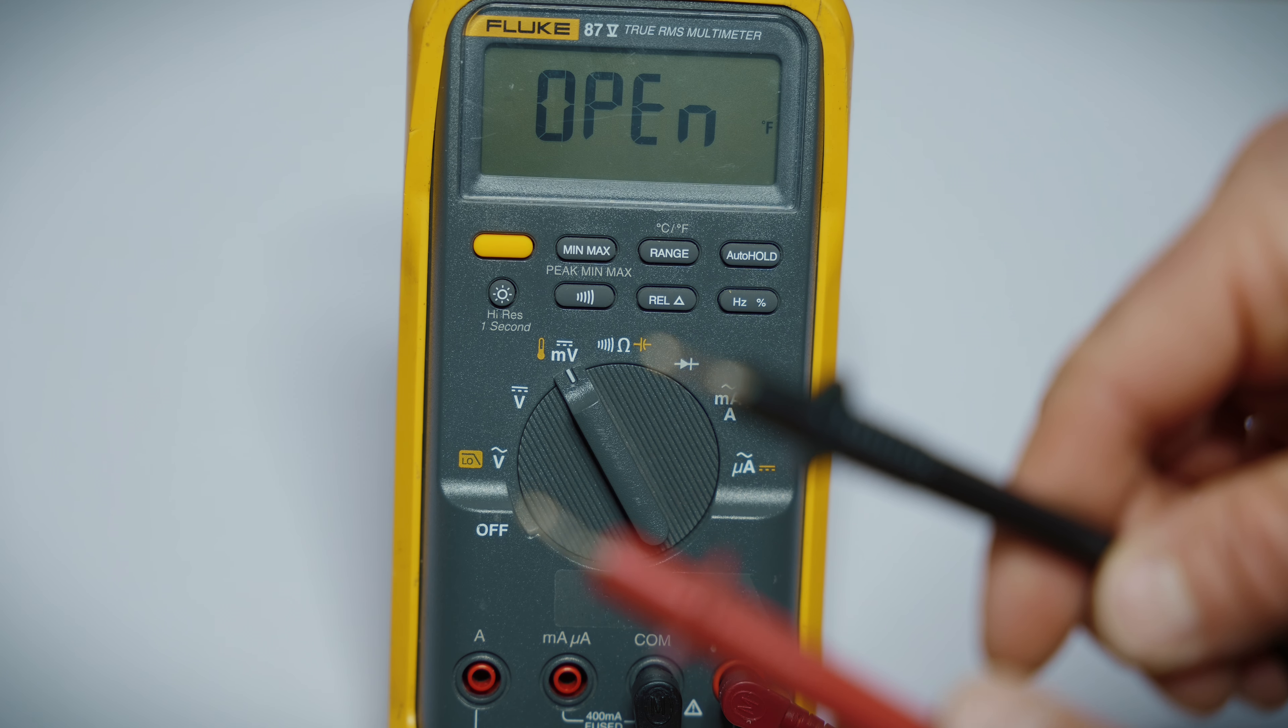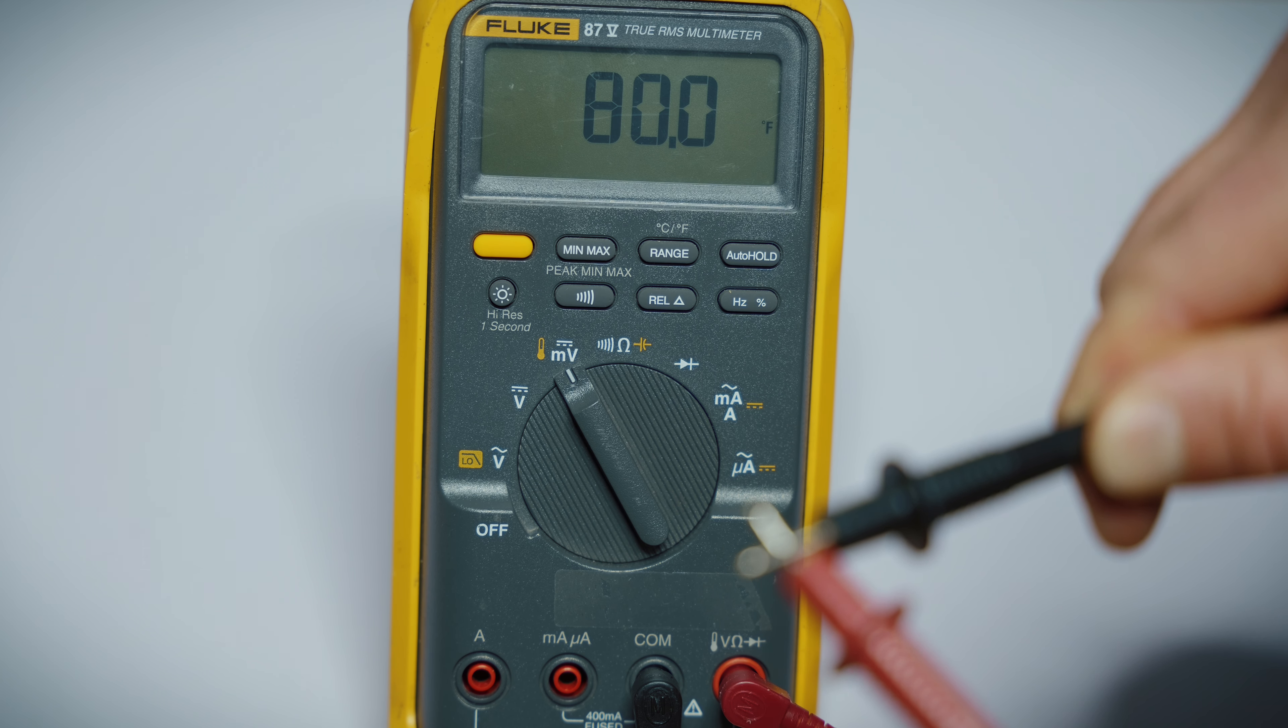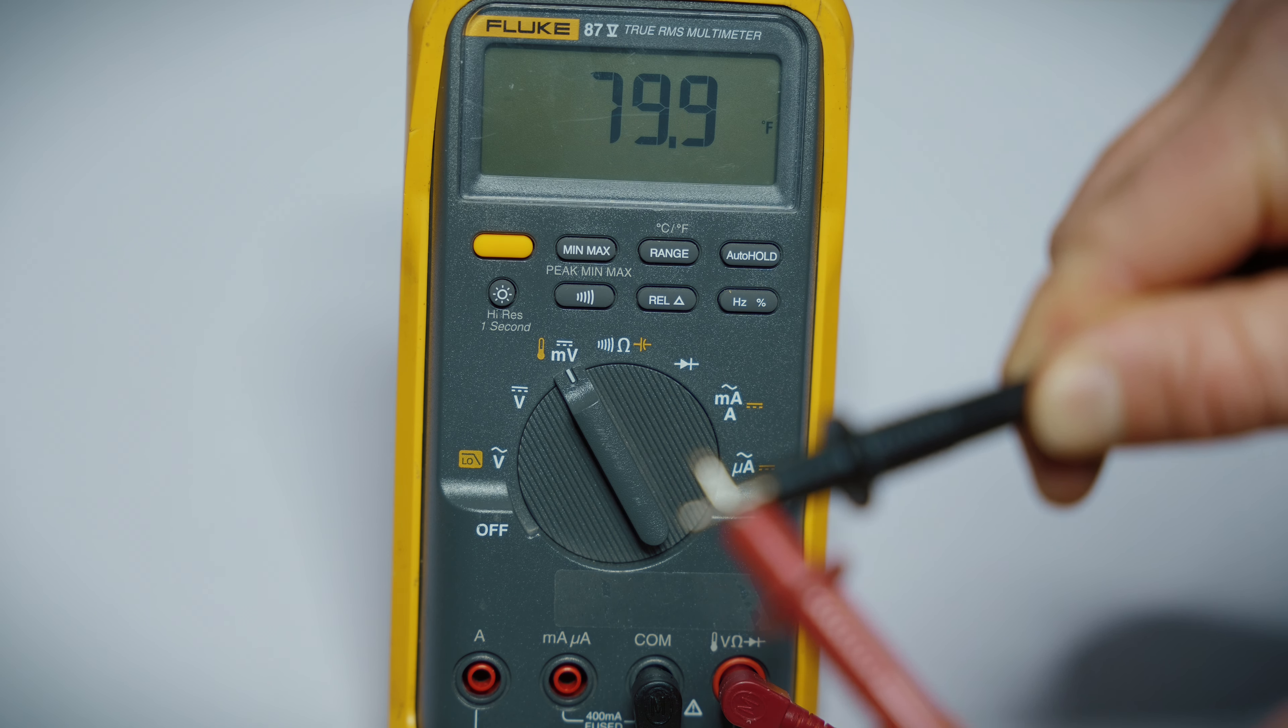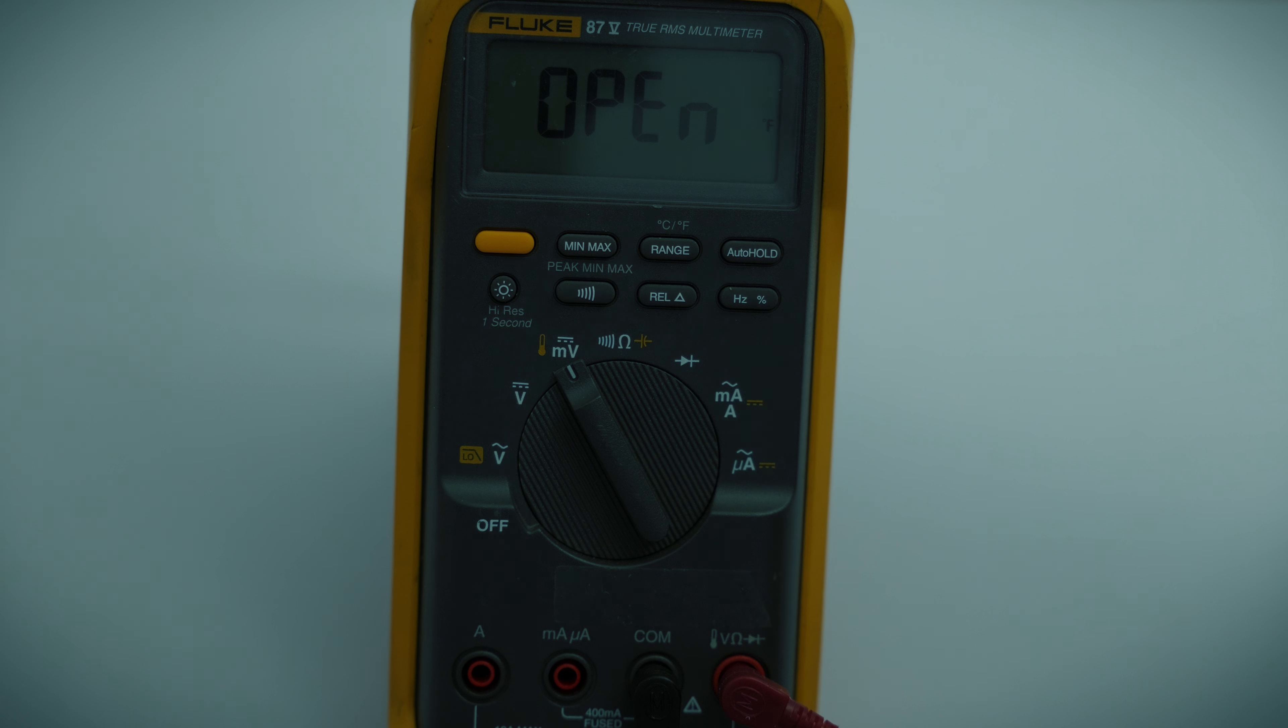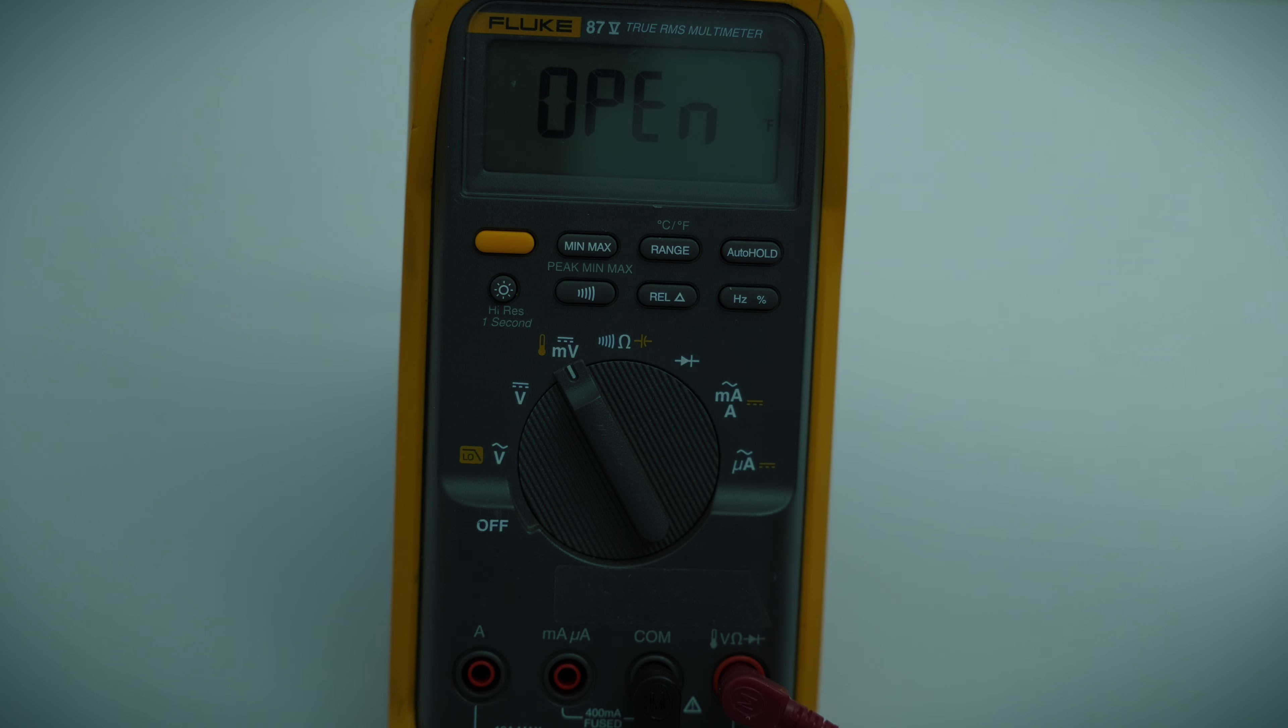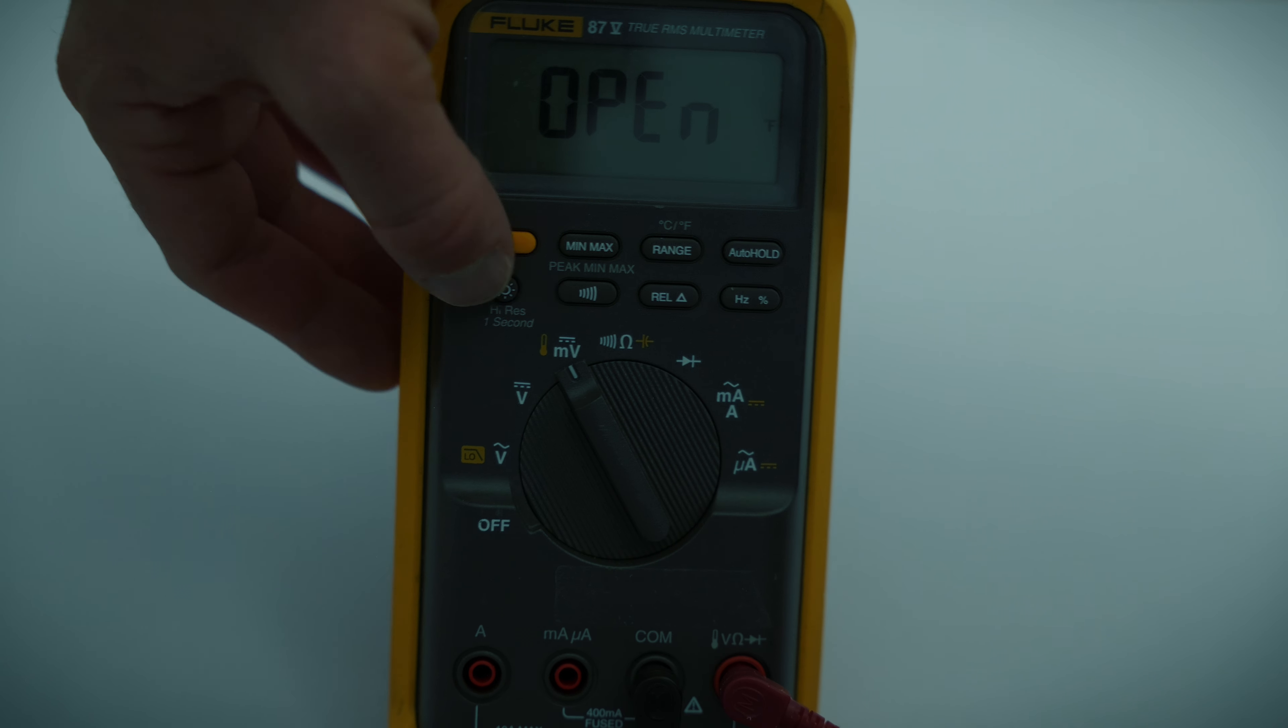Now you also have the temperature setting, which is the orange thermometer there. You need to be in the millivolt, and then hit your shift key. When you start out, it's open. That's because we're not touching our probes together. As soon as we touch our probes together, it is going to read the temperature in the area that the probes are touching.